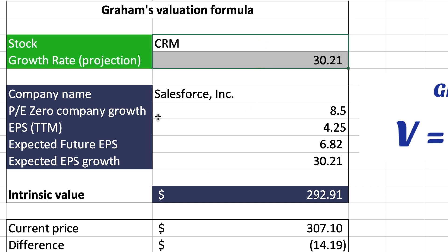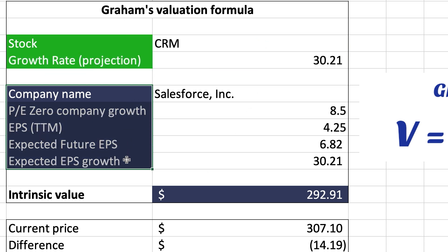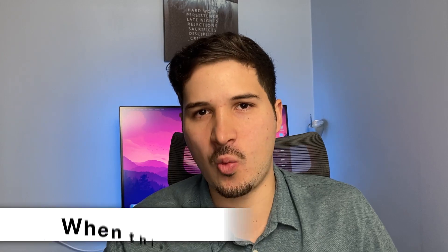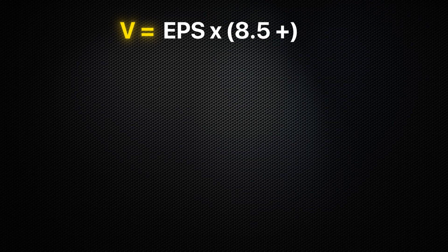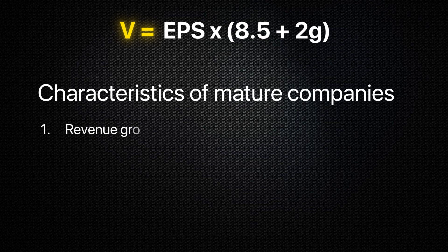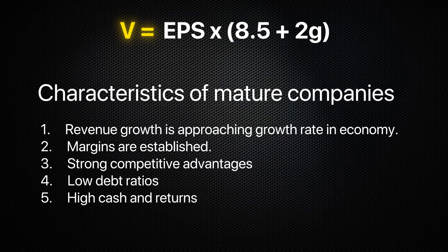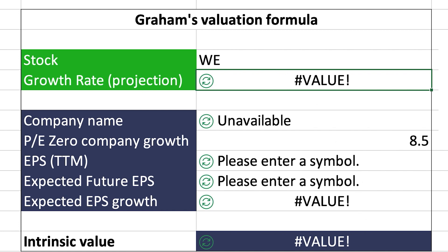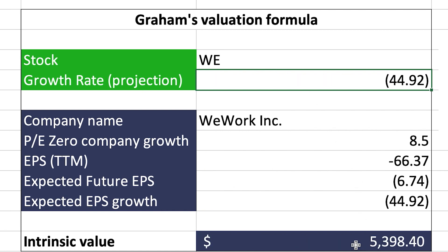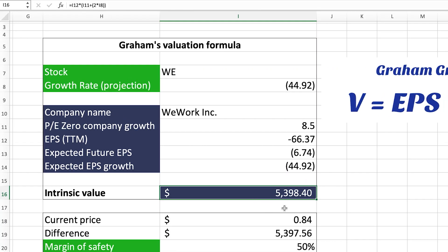For this template, green cells represent cells where you need to enter information, and blue cells are calculated values based on what you provided. Before applying this formula to every stock you know, you need to understand when it's effective. The Benjamin Graham formula works best for mature, financially stable companies with a long track record of success, because the formula doesn't work well with companies that have negative earnings or an unknown future growth rate.